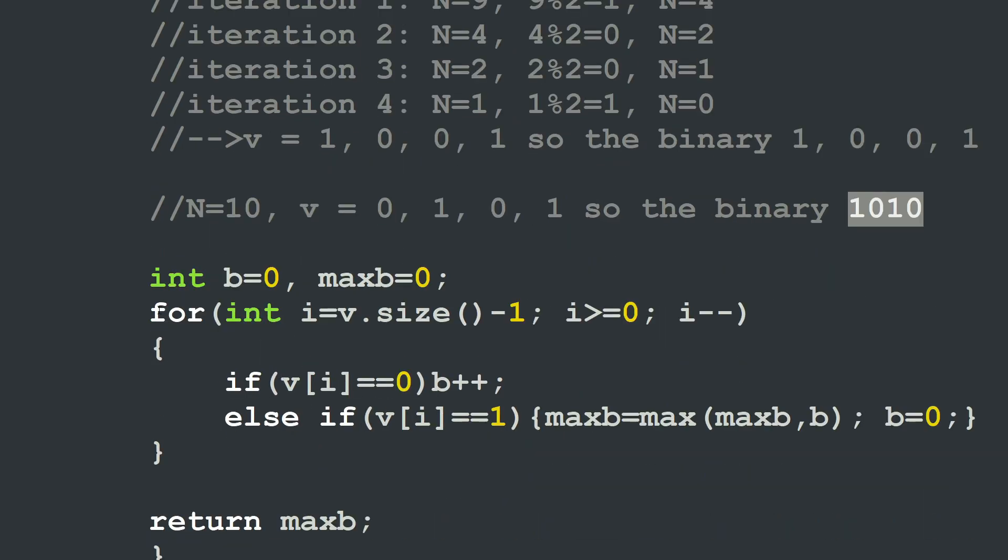And in this case, I will run my digits in reversed order. So I will start with the last element of my vector. So for int i, the index i is at v.size minus 1, which is the index of the last number in the vector v. And as long as i is positive, I will decrement i. So I'm running the vector in reversed order.